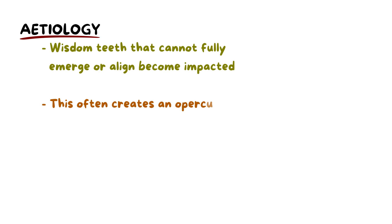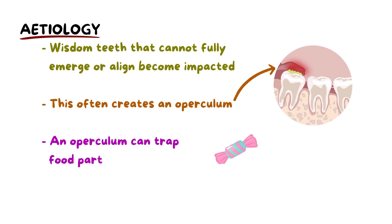When a wisdom tooth is unable to fully emerge or align correctly due to spatial constraints, it becomes impacted or partially erupted. This partial eruption often results in a flap of gum tissue called the operculum that covers a portion of the tooth. The operculum can trap food particles and bacteria, creating a haven for bacterial growth and setting the stage for infection and inflammation.